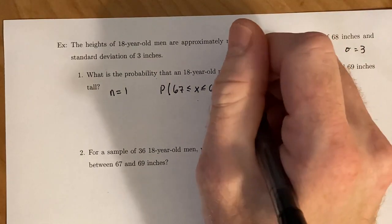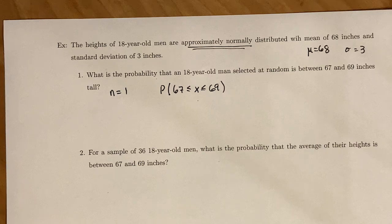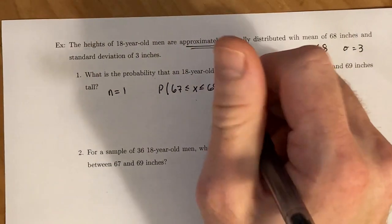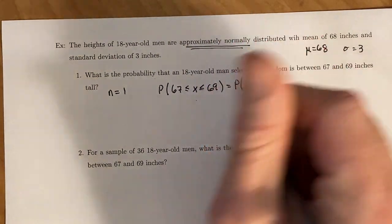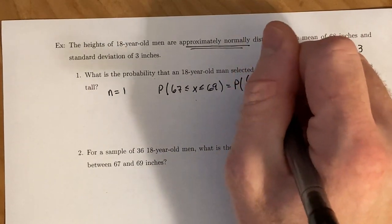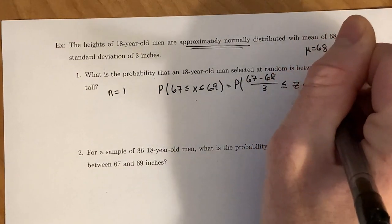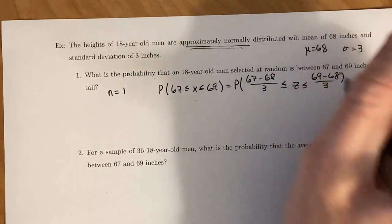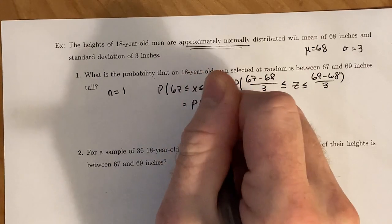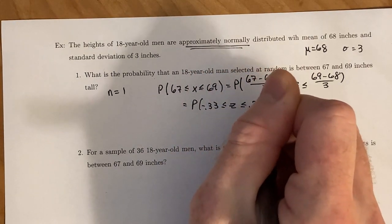Since we're told that this is approximately normal, we don't have to do anything fancy. We can just find the normal probability. So convert 67 and 69 into its z-score. All right, that's going to be the probability that's negative 0.33 less than or equal to z less than or equal to 0.33.